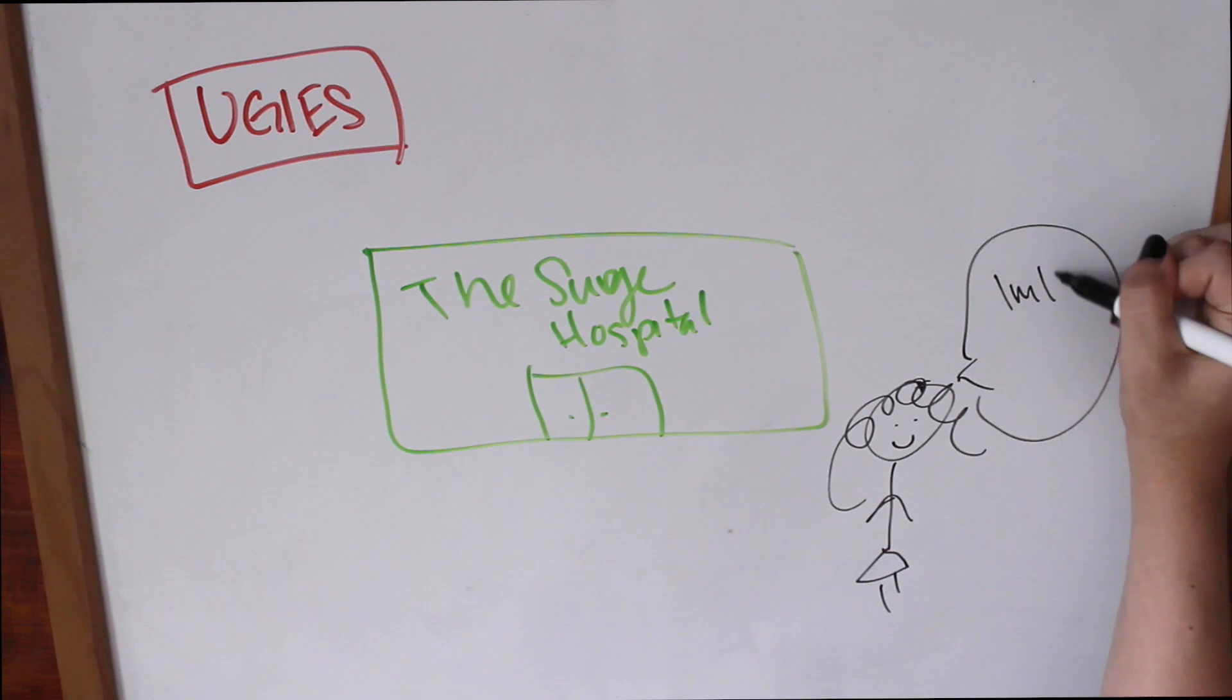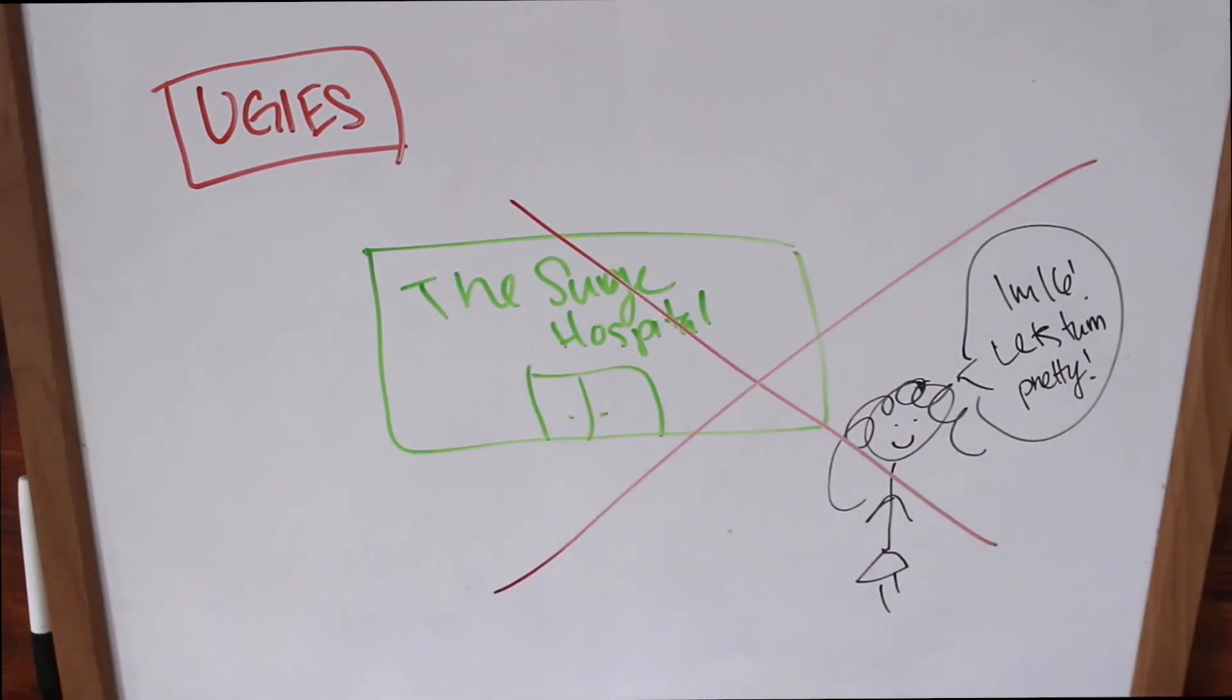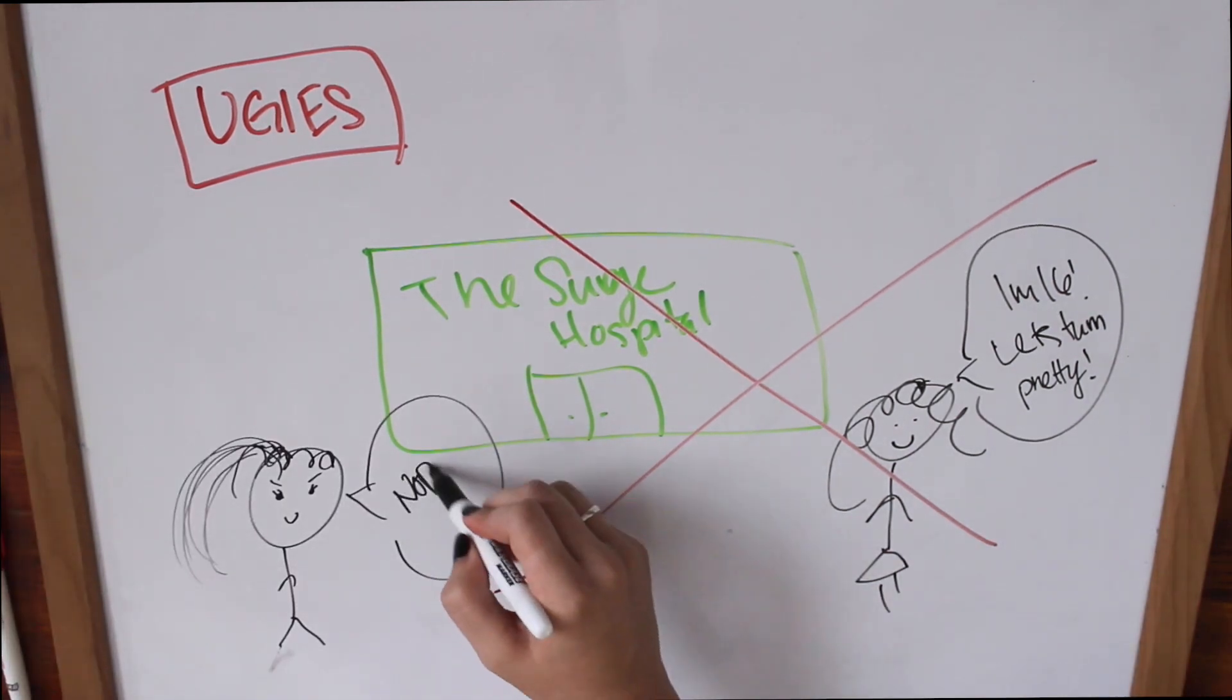There were clues in the Rusty Ruins on how to get to a place called the Smoke, where a boy named David that Shay knew of would meet us and take us in. I was skeptical of this adventure and really wanted to turn pretty, so I made Shay go alone. But then I met Dr. Cable, and instead of letting me have the surgery to turn pretty, she threatened me that if I didn't give her information on the smoke, then she would never let me turn pretty. So I followed Shay.